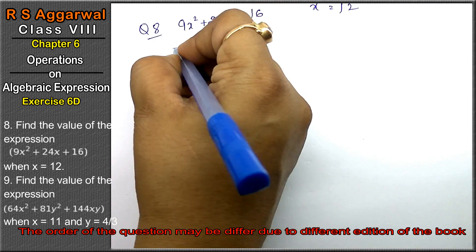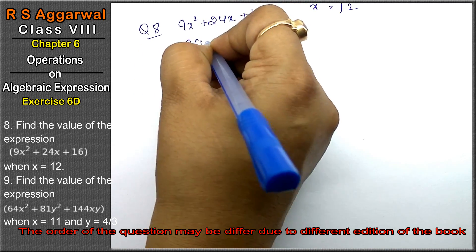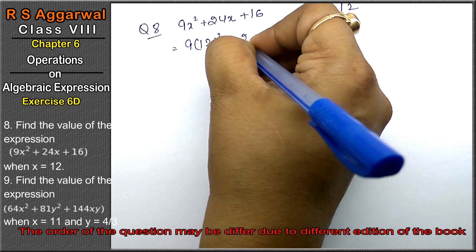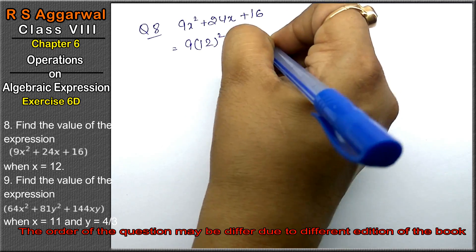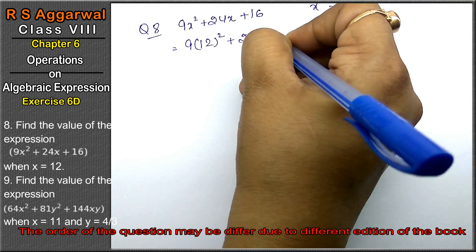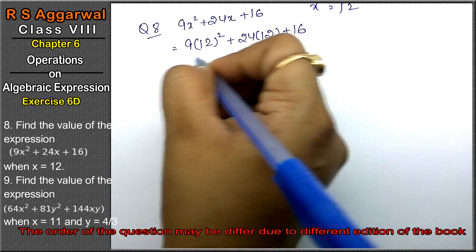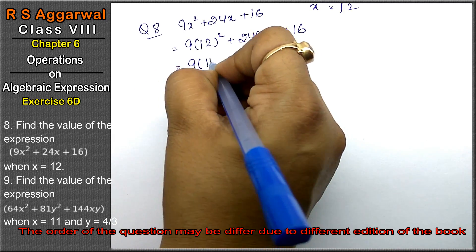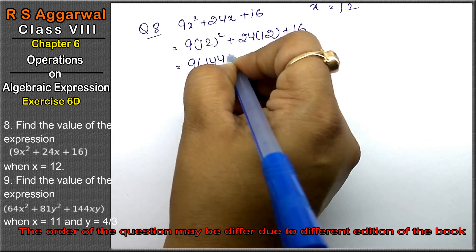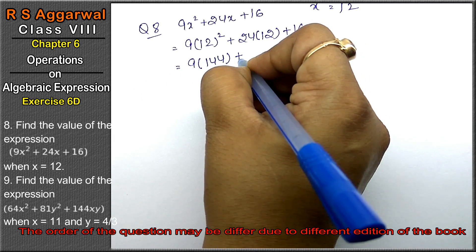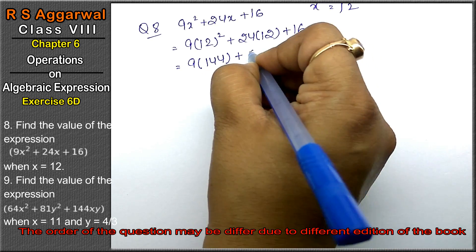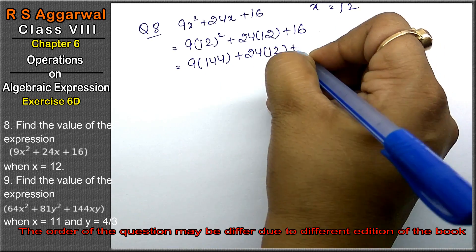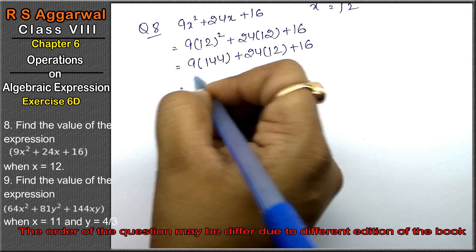So let's substitute this value. When x = 12, we write 9 × 12² + 24 × 12 + 16. So 12² is 144, giving us 9 × 144 + 24 × 12 + 16.